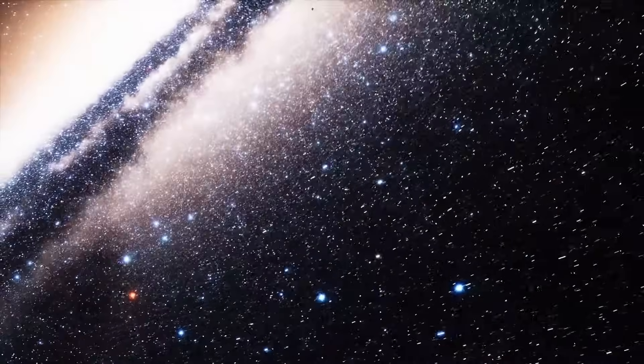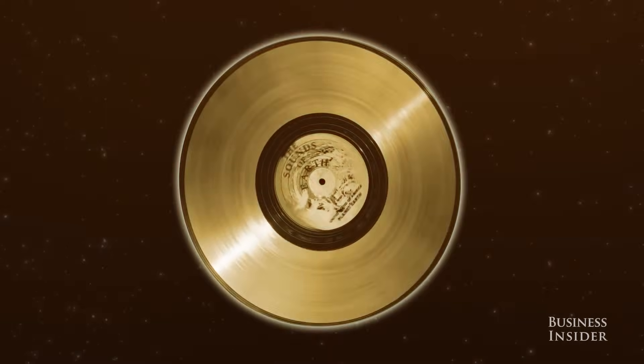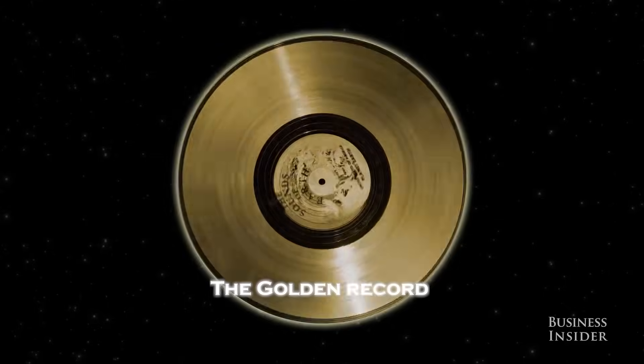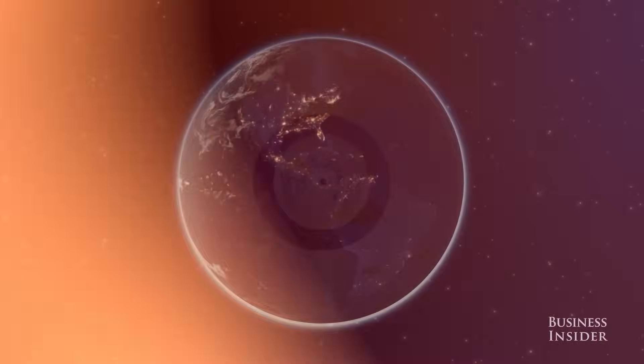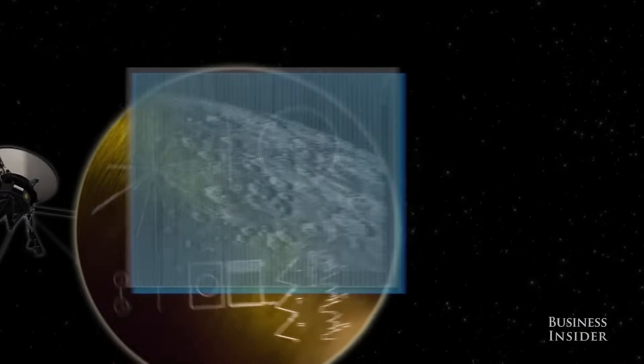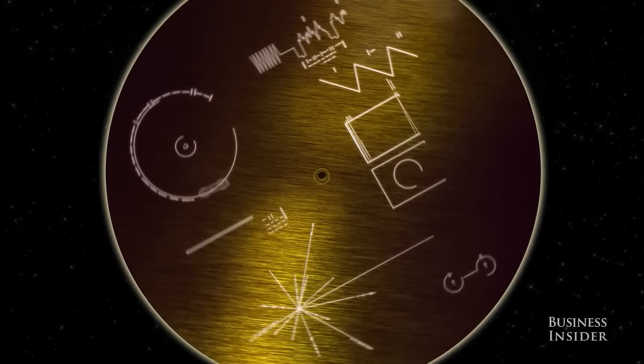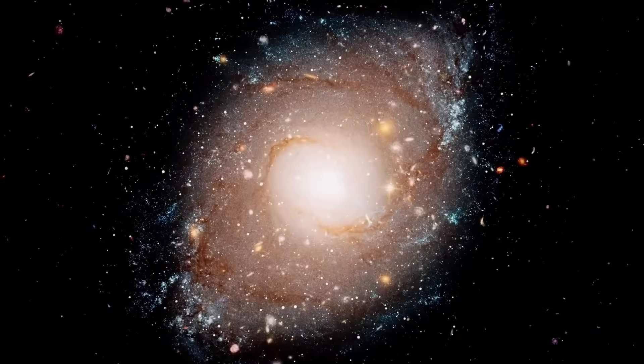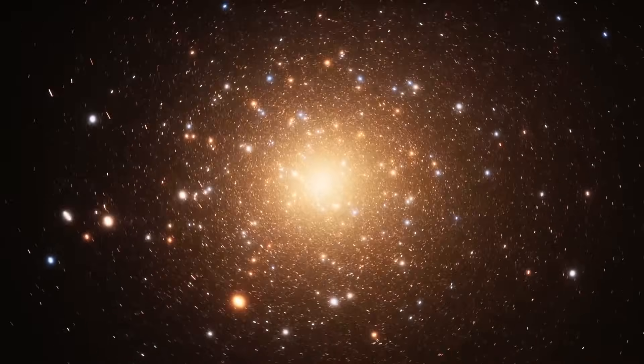The object Voyager imaged was now emitting a signal of its own. A new frequency. One that mirrors the golden record Voyager carried from Earth. Only this time, the message was not from us. It was to us. And the voice behind it? Unmistakable. Not human. Not synthetic. But familiar. Like an echo we didn't know we'd been hearing since the dawn of our species.